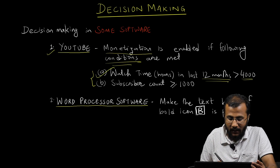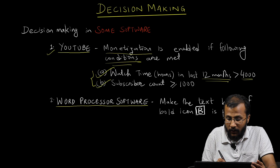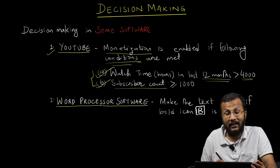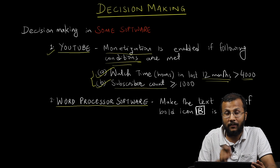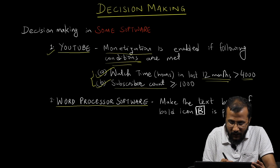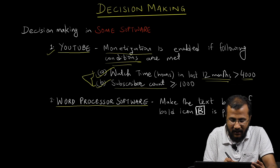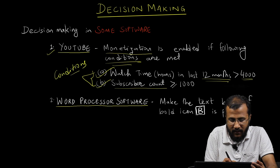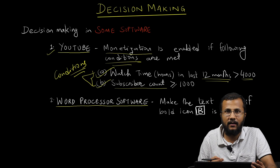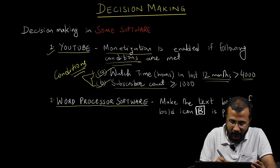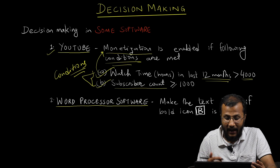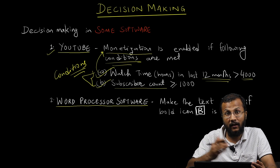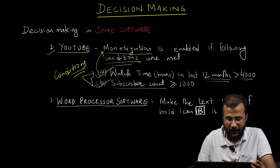Condition B: your subscriber count should be greater than or equal to 1000 — meaning you should have at least 1000 subscribers on your channel. Only when both of these conditions are met is your monetization enabled. This is one application of decision-making statements in a real-world software like YouTube.